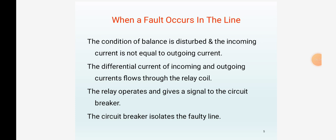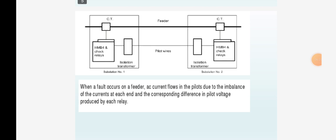In pilot wire protection using circulating current differential relay schemes, the schematic arrangement for the circulating current principle has two CTs connected in each protected line, one at each end. Under healthy or external fault conditions, the secondary currents are equal and circulate in the pilot wires.